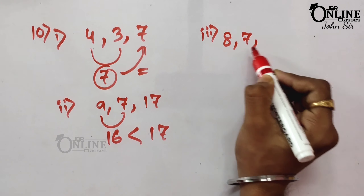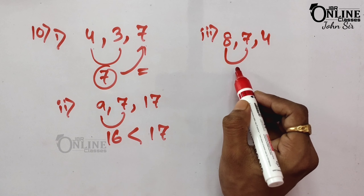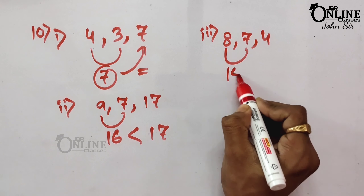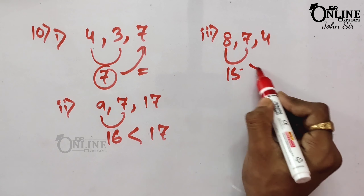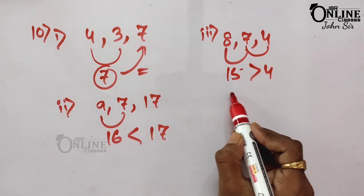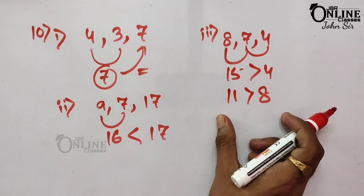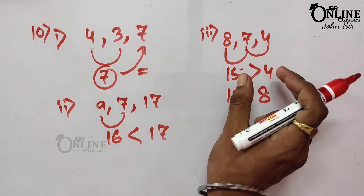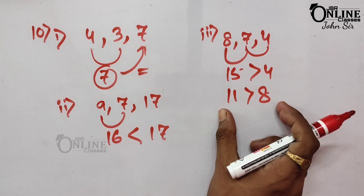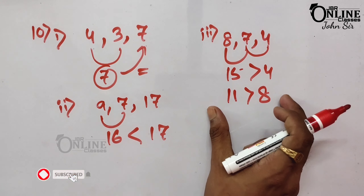Number 3: Is it possible to construct a triangle with sides 8, 7, and 4? Here 8 + 7 = 15 > 4, and 7 + 4 = 11 > 8. The sum of any two sides is greater than the third side, so yes, it is possible to construct this triangle.